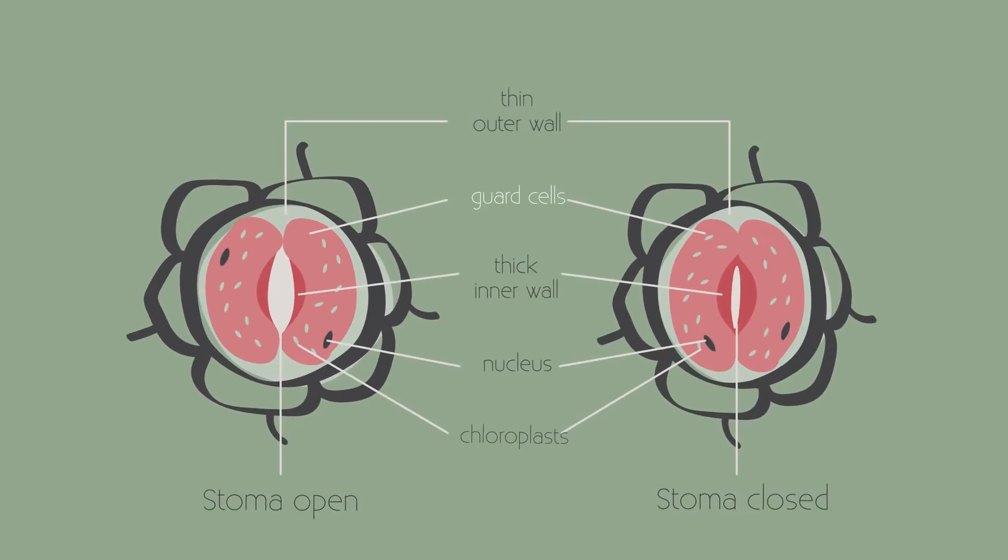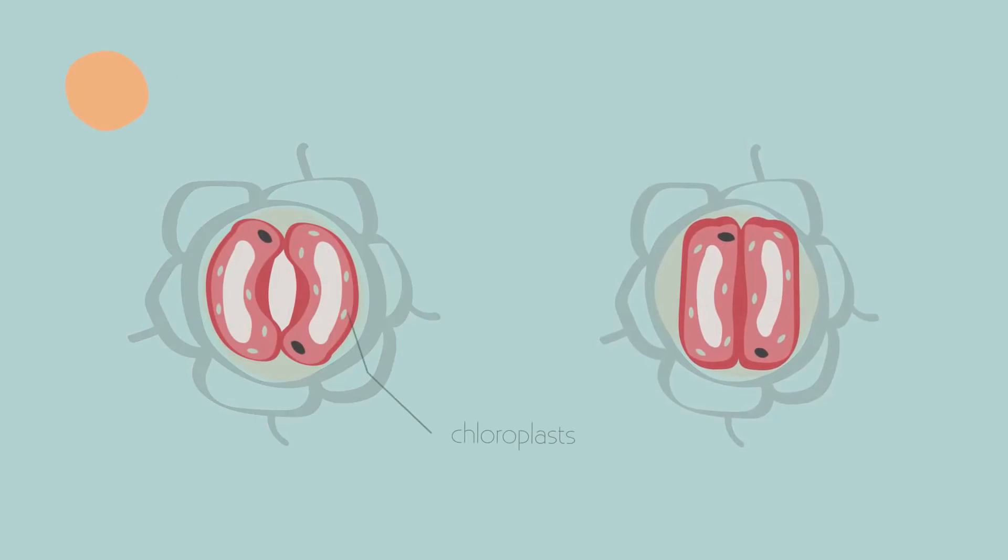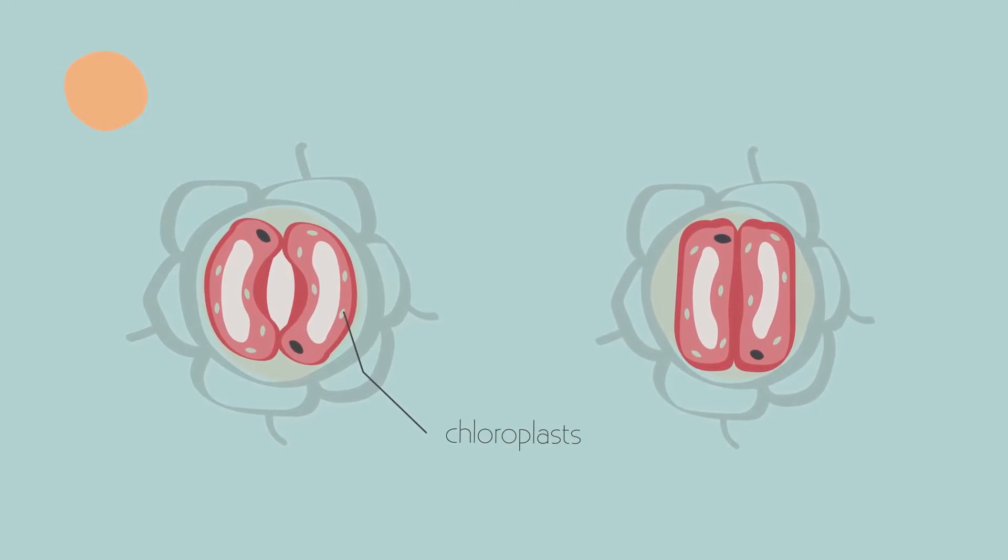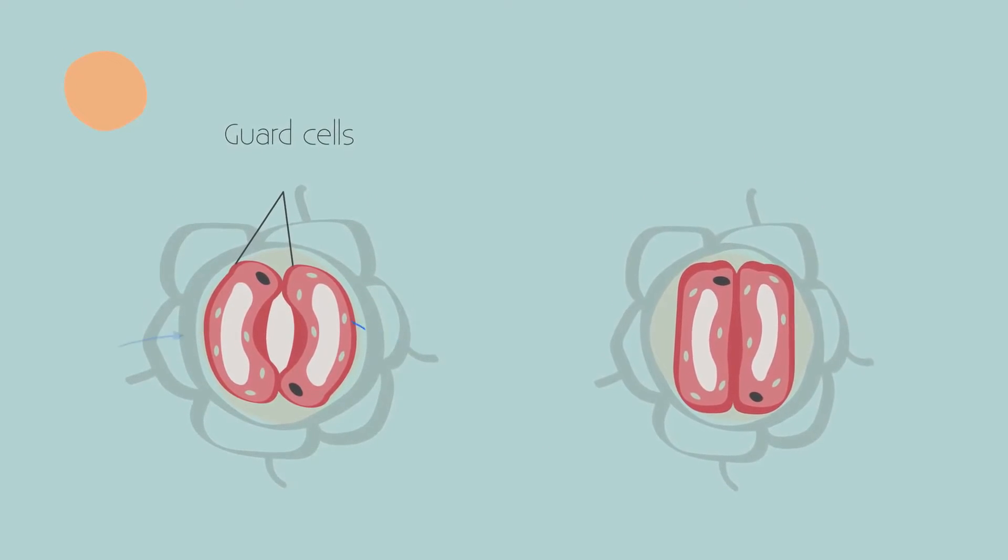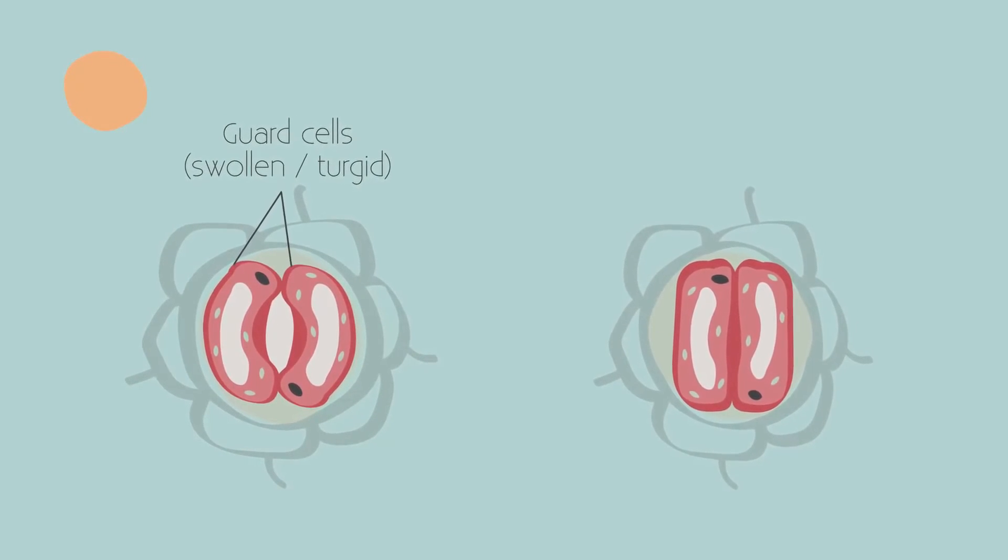There are guard cells on either side of the stomata which regulate this. During daylight hours, chloroplasts produce sugar. This lowers the water potential of the guard cells, and they take in water by osmosis. This makes the guard cells turgid, because the guard cells have a different cell wall thickness.